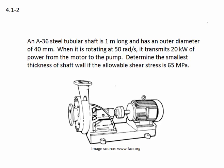When it is rotating at 50 radians per second, it transmits 20 kilowatts of power from the motor to the pump. Determine the smallest thickness of the shaft wall if the allowable shear stress is 65 megapascals.